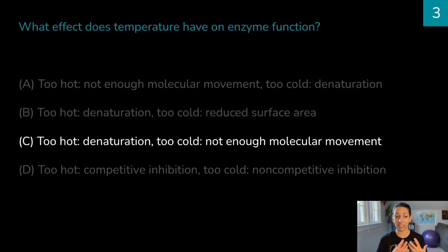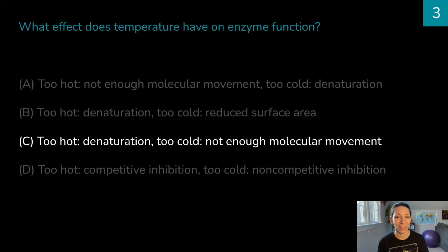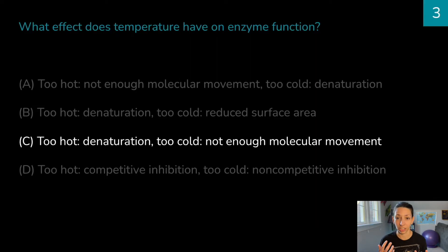Too hot, we could have denaturation — the enzyme could unfold. And too cold, we usually don't have enough molecular movement. As temperature decreases, molecular movement slows down. When we don't have enough molecular movement, we have fewer opportunities for particles to collide and combine for the reaction to happen at all. If molecules aren't moving enough, we won't have enough interaction between the enzyme and the substrate.